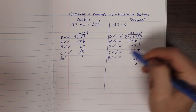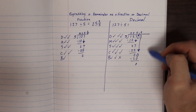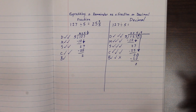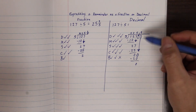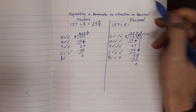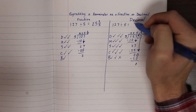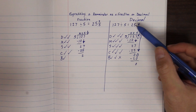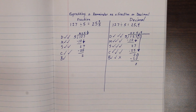Check: 0 is less than 5. Do we have anything else to bring down? No. If we had more remaining we could add another zero and continue to the hundredths, thousandths, ten-thousandths place — we can keep going unless it repeats, and then you want to stop. So the quotient for 127 divided by 5 is 25.4 — the same thing as 25 and 2 fifths!